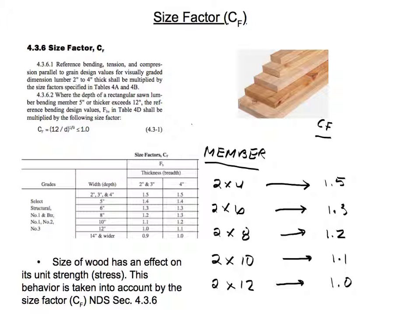Hello everyone, for this video I'm going to be talking about the size factor. Section 4.3.6, size factor CF: the reference bending, tension, and compression parallel to grain design values for visually graded dimension lumber 2 inches to 4 inches thick shall be multiplied by the size factors specified in Tables 4a and 4b. The size factor accounts for